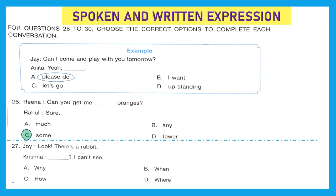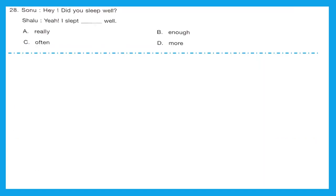Question 27, Joy: Look, there is a rabbit. Krishna dash question mark, I can't see. That means Krishna is asking where it is. The right answer should be option D, where. Question 28, Sonu: Hey, did you sleep well? Shalu: Yeah, I slept dash well. Will it be really well, enough well, often well, or more well? The right adverb should be really well. Option A is the right answer.